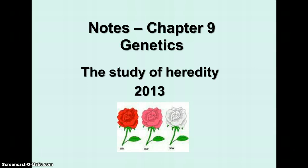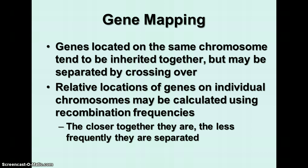As we continue on with our study of genetics, we'll now talk about gene mapping and gene expression. We talked in our last set of notes about linked genes — genes that are located on the same chromosome. They have a tendency to be inherited together, but crossing over occurs during meiosis, and so genes on the same chromosome may be separated by crossing over. You can figure out the relative locations of genes on chromosomes by calculating recombination frequencies.